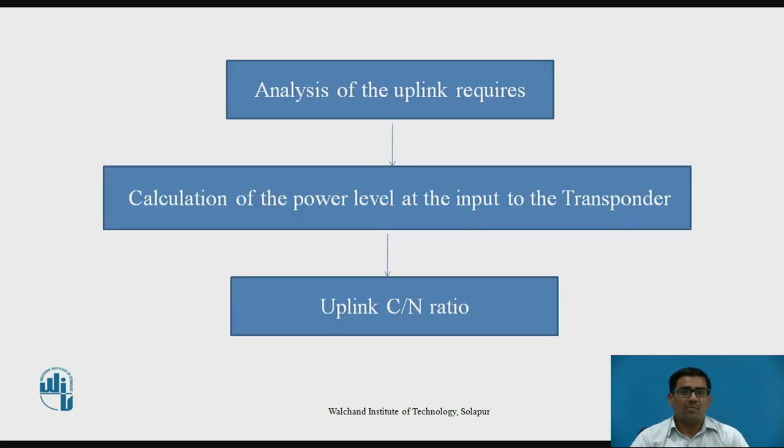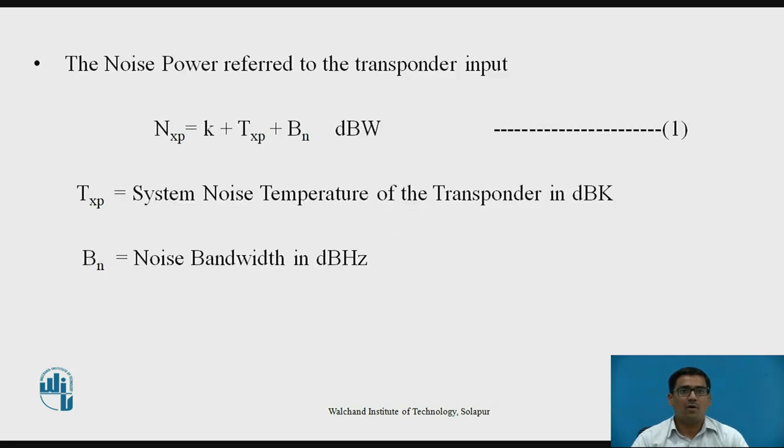Analysis of the uplink requires calculation of the power level at the input to the transponder and from that we calculate the uplink C/N ratio. The noise power referred to the transponder input is N_xp = K + T_xp + B_n, the unit is dBW. Where T_xp is system noise temperature for the transponder in dBK and B_n is the noise bandwidth in dBHz where K is Boltzmann constant.